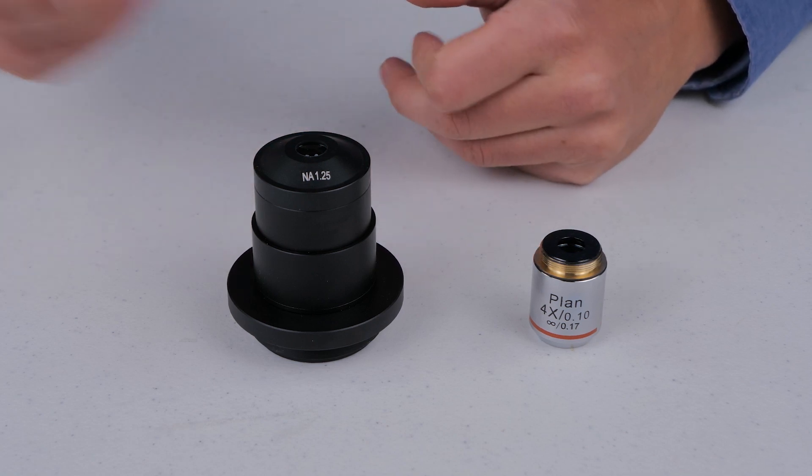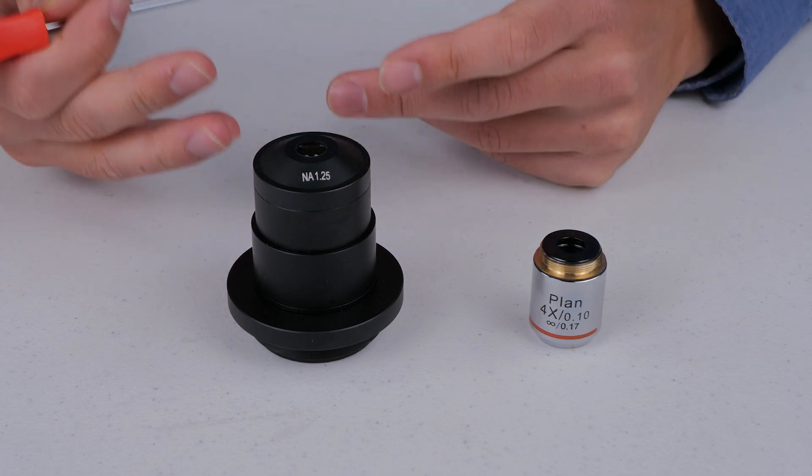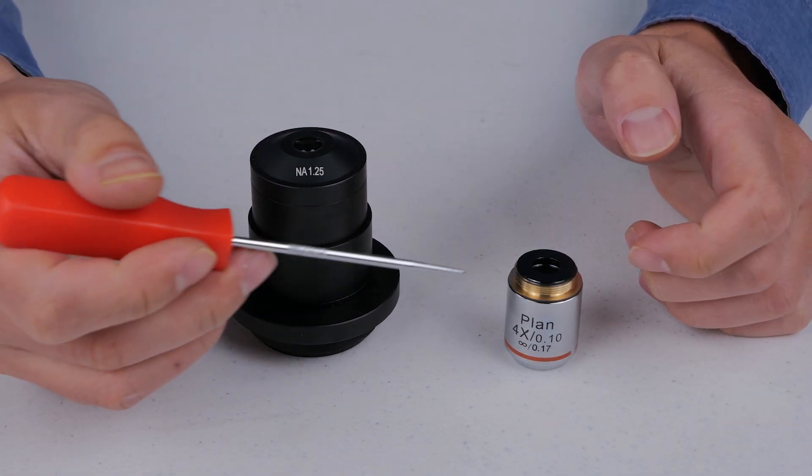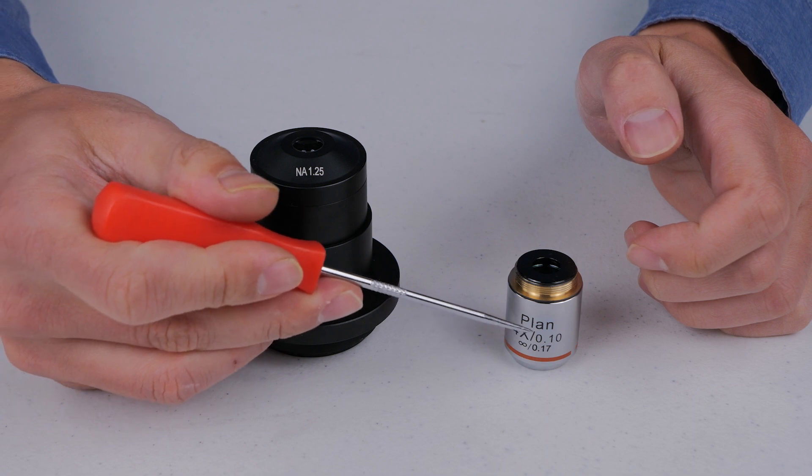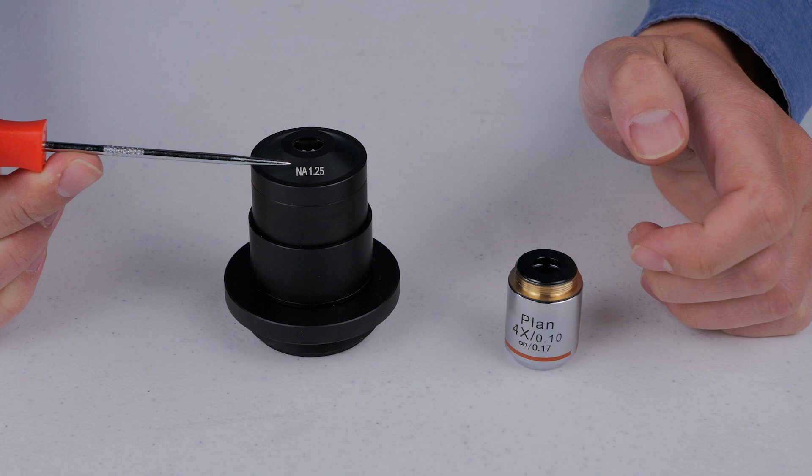What is numerical aperture in microscopy? The simplest way to understand it is it's just the angle of light that is coming into or going out of something. The most common place you'll see a numerical aperture number is on a microscope objective, so that would be this 0.1 number right there, or on a microscope condenser which is 1.25 on this one.